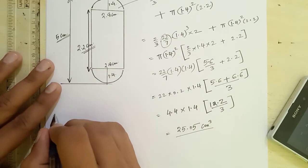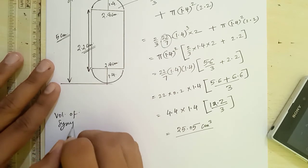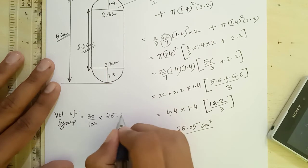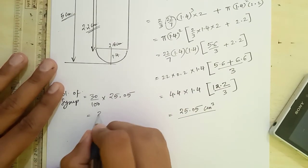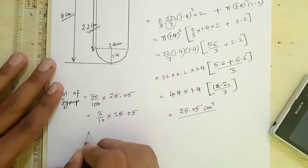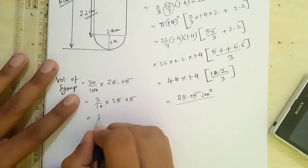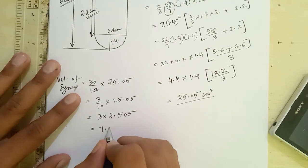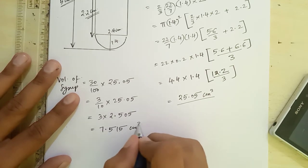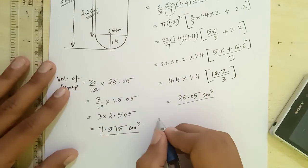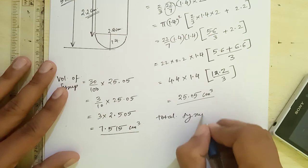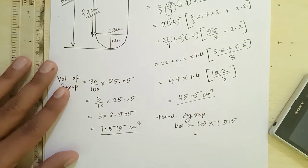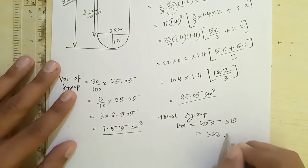The volume of syrup per gulab jamun is 30% of 25.05, which is 30/100 × 25.05 = 3/10 × 25.05 = 3 × 2.505 = 7.515 cm³. For 45 gulab jamuns, the total syrup volume is 45 × 7.515 = 338.175 cm³.